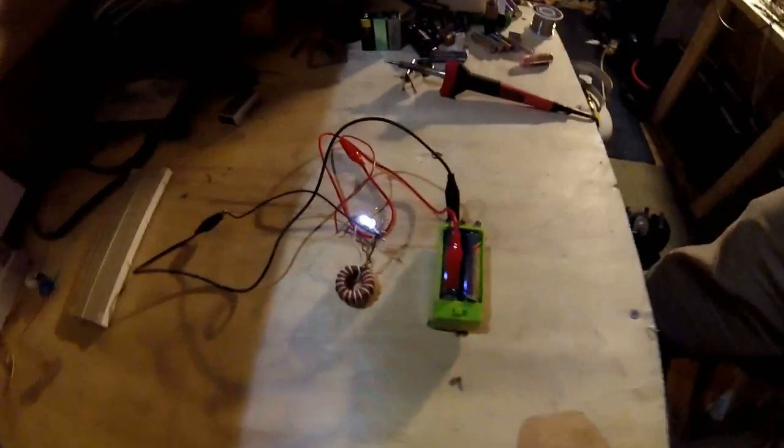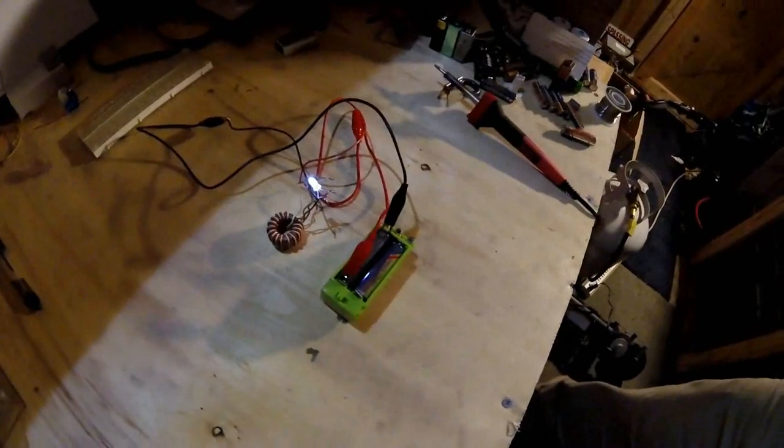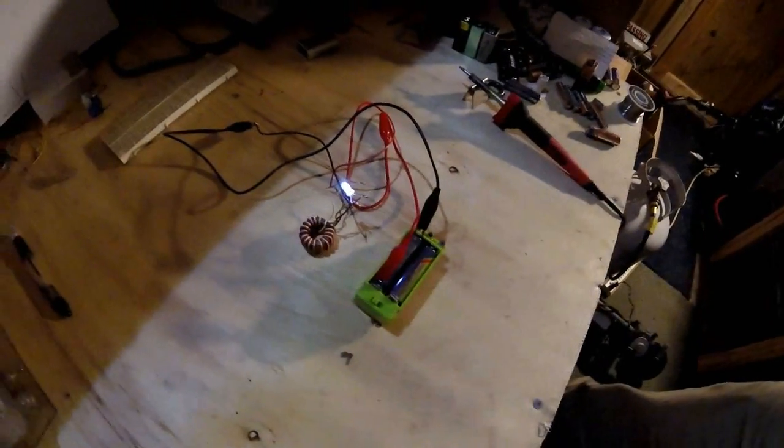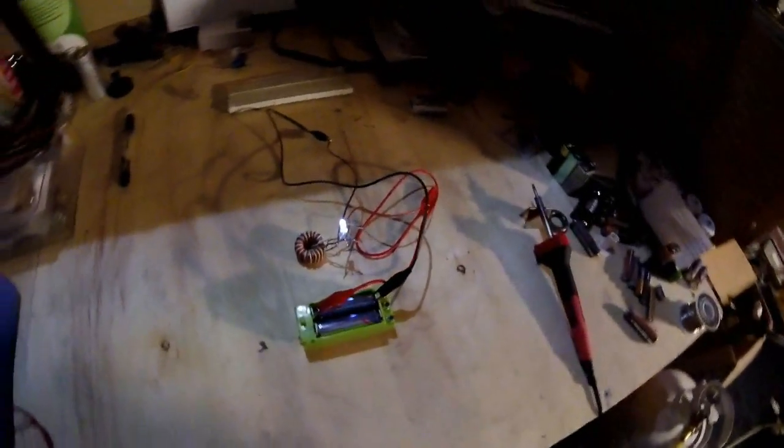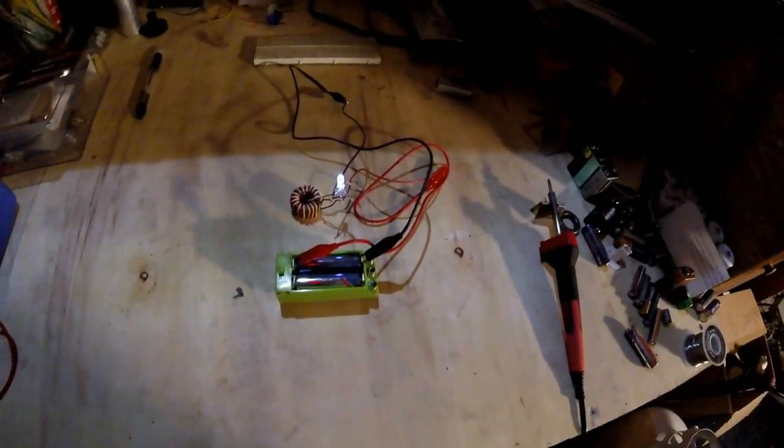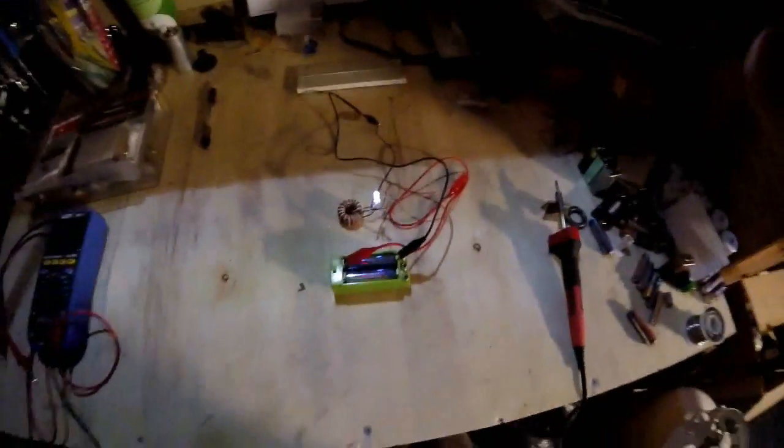Hey guys, just a little update on the joule thief. The LED is still glowing brightly after running all night long, and this is mid-morning, so it's been going for a long time on 0.6 volts.